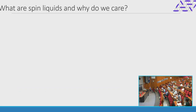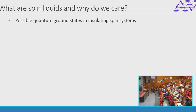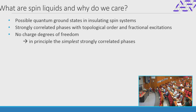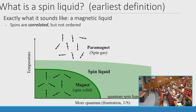I want to start with the broad motivated question of what are spin liquids — more for the students, which has already been partially addressed, so I'll go fairly quickly. And why should we care? Why should we look for new spin liquids? The simplest definition: these are possible quantum ground states in insulating spin systems — strongly correlated phases with topological order and fractional excitations, and some of the simplest examples of these phenomena.